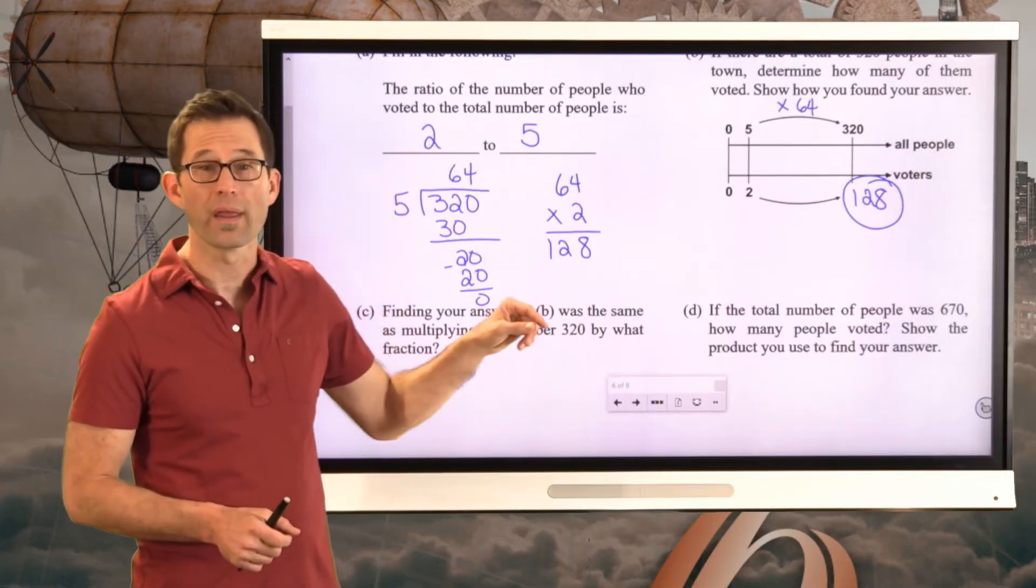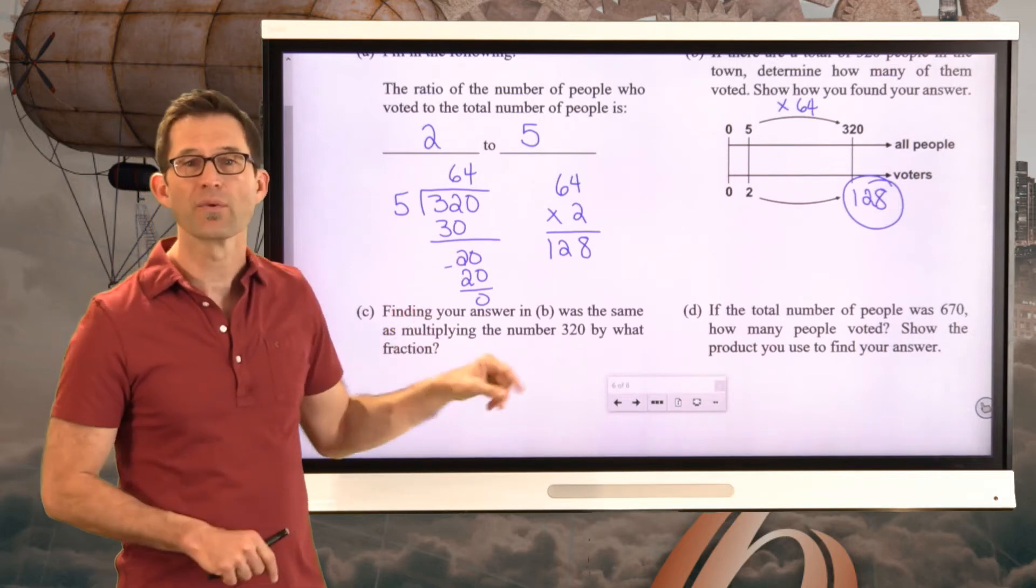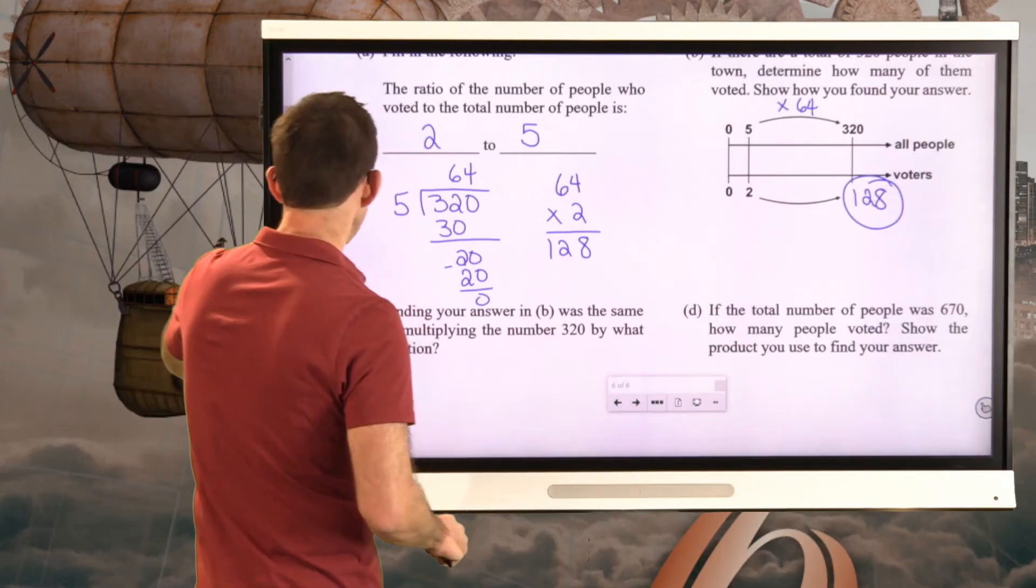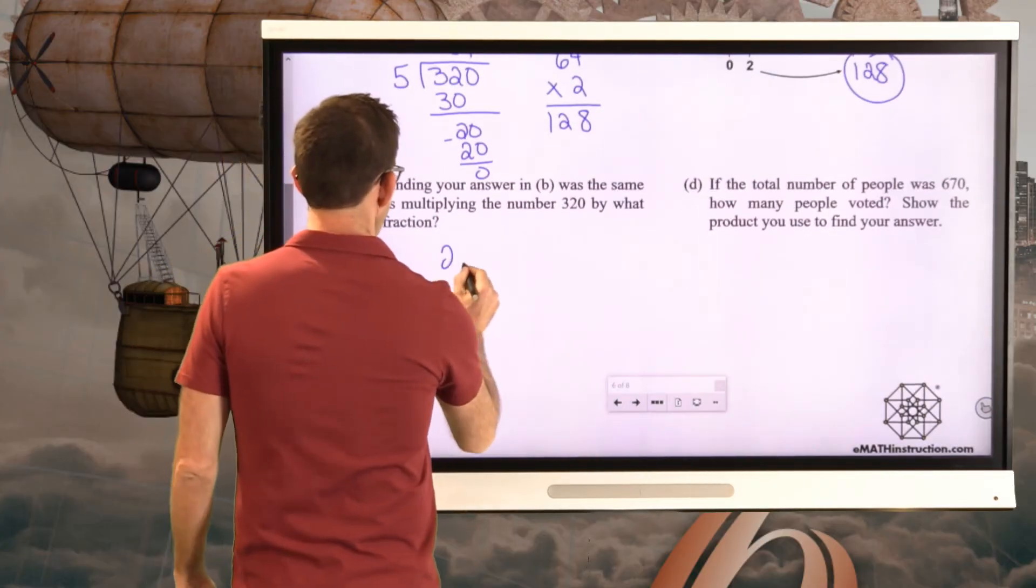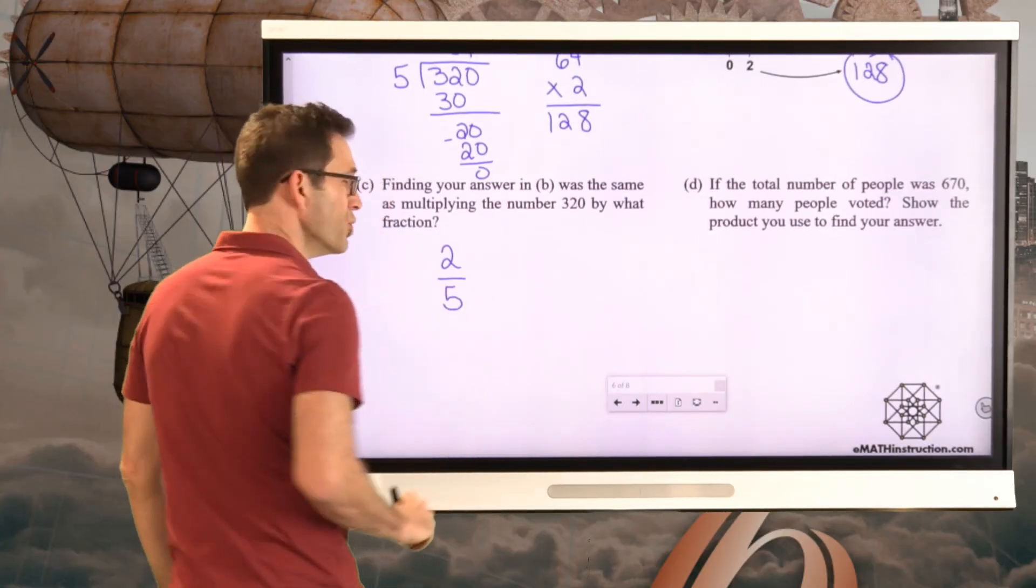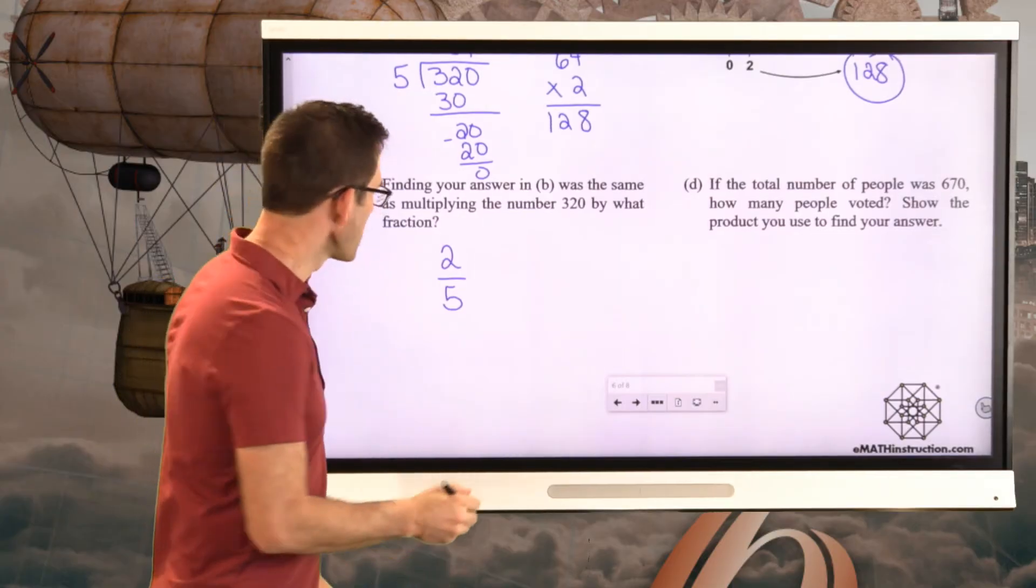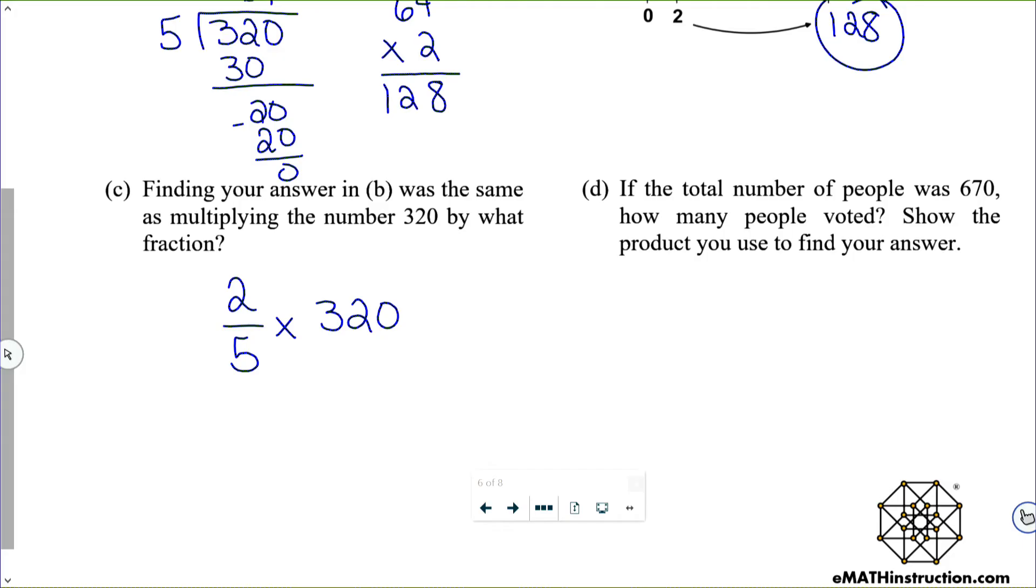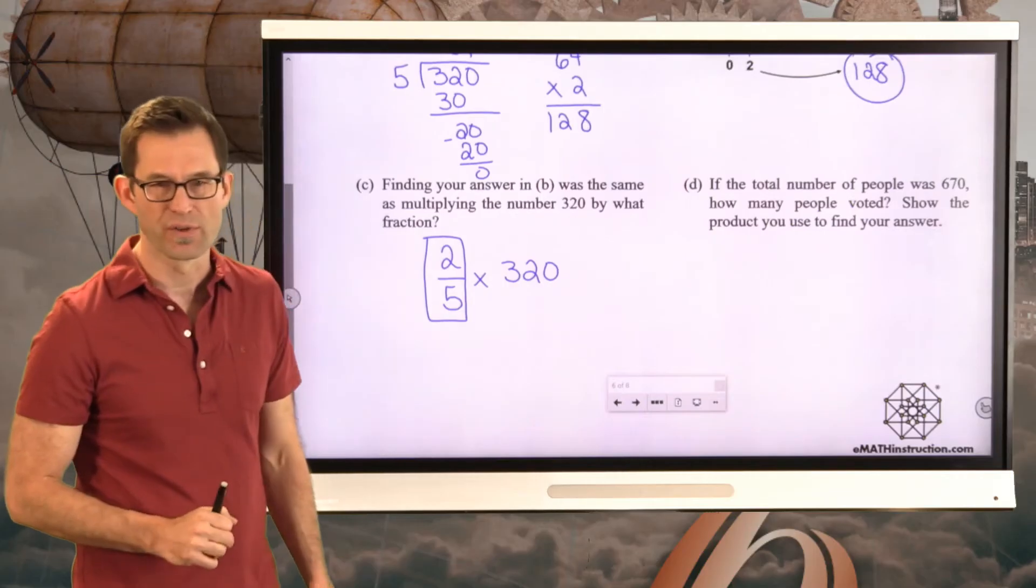Well, I'm taking 320. I'm dividing by five, taking that result and multiplying by two. And that is by definition the same as multiplying by two-fifths. Again, the answer to this problem is just two-fifths. It's not two-fifths times three-twenty.